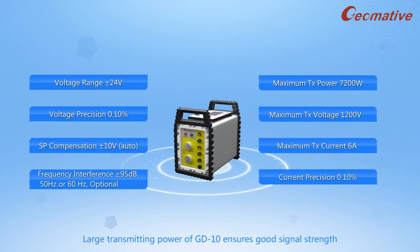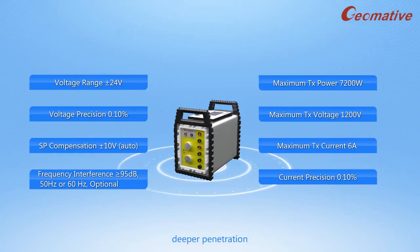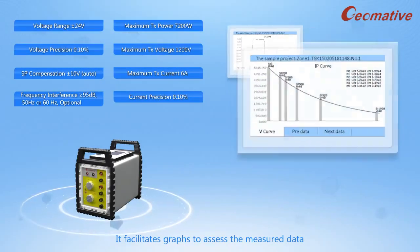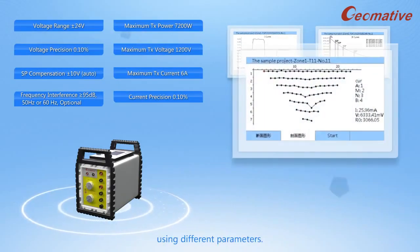Large transmitting power of GD-10 ensures good signal strength, deeper penetration, reduced noise, and good precision in weak signal or deep investigation. It facilitates graphs to access the measured data using different parameters.